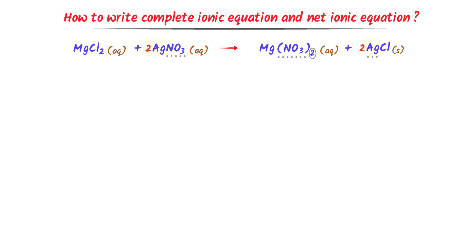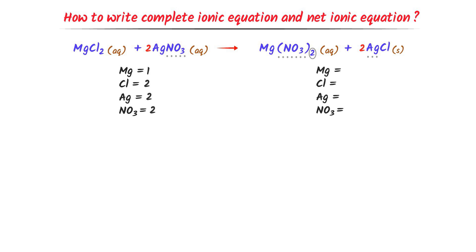Now let me check it. At the left-hand side: one magnesium, two chlorine, two silver, and two nitrate ions. At the right-hand side: one magnesium, two chlorines, two silver, and two nitrate ions. Hence, left-hand side equals right-hand side, and this reaction is completely balanced.